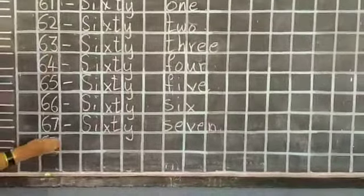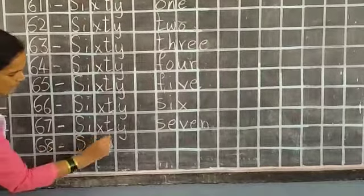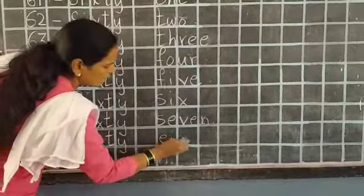Next, 68. Small dash, capital S-I-X-T-Y, sixty. Leave a box. E-I-G-H-T, eight.